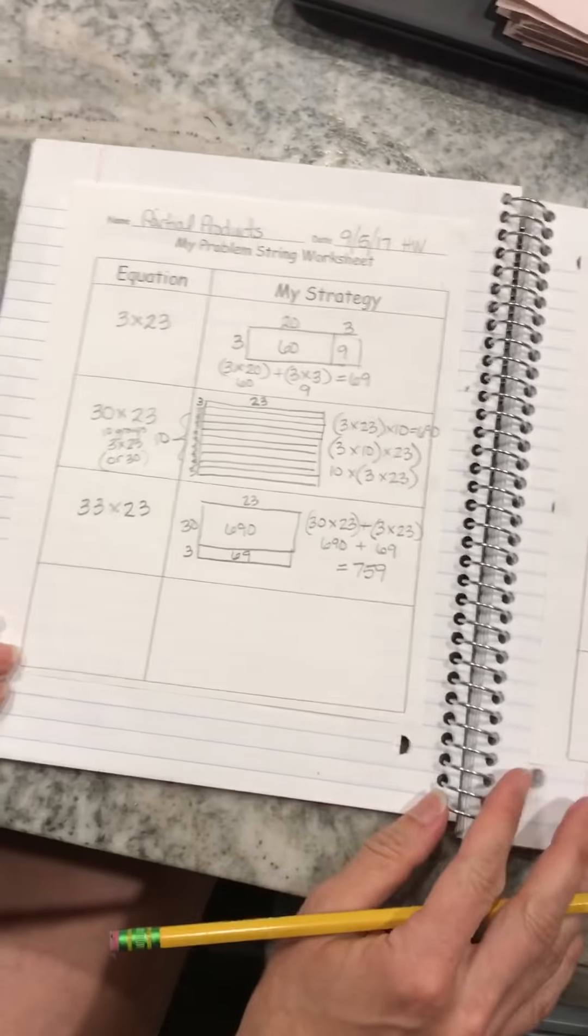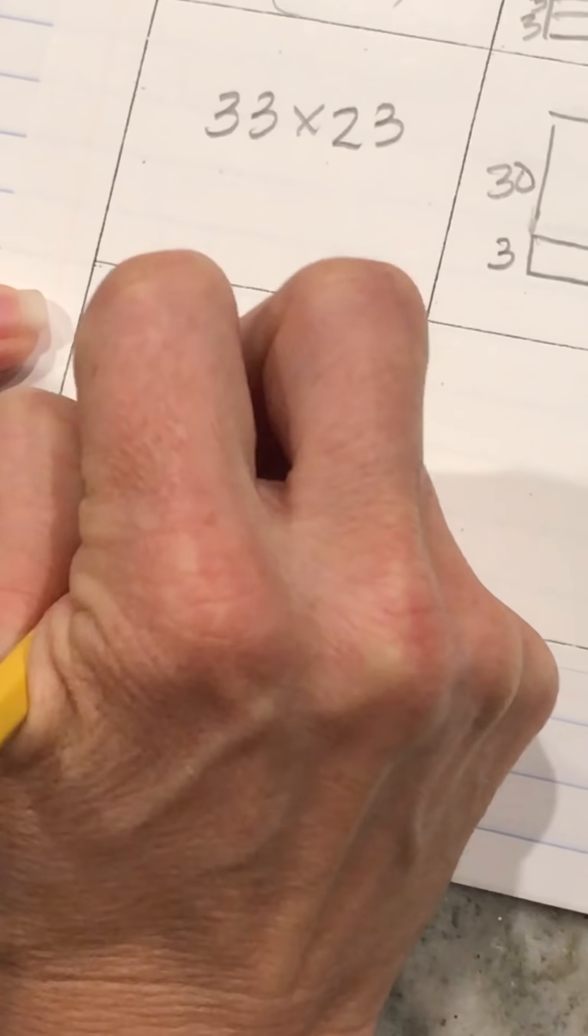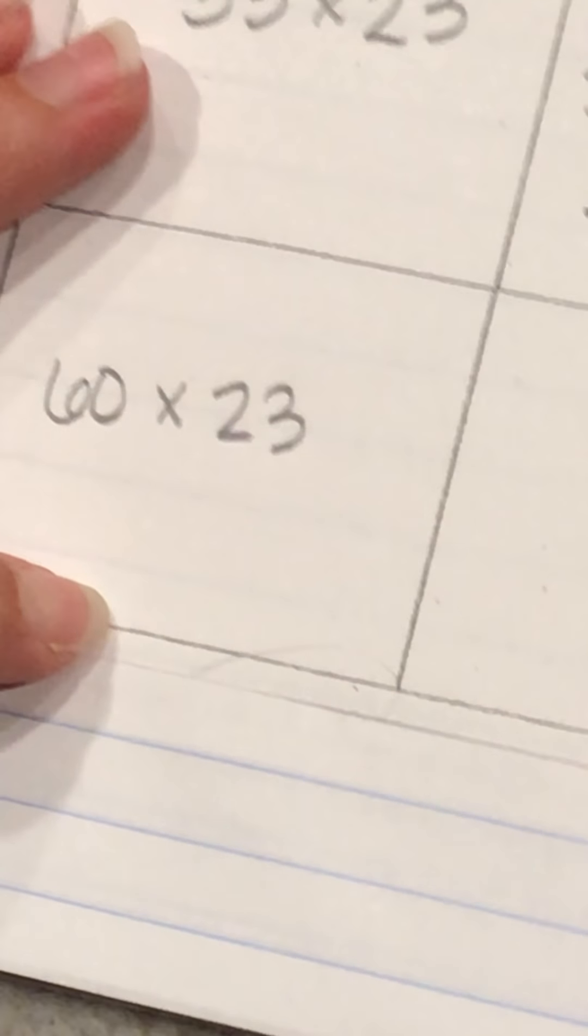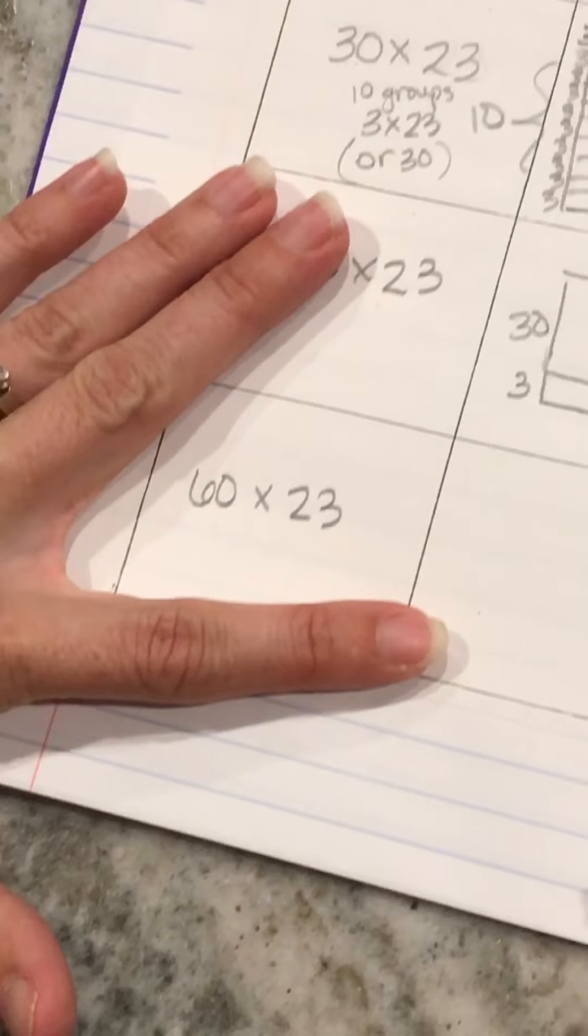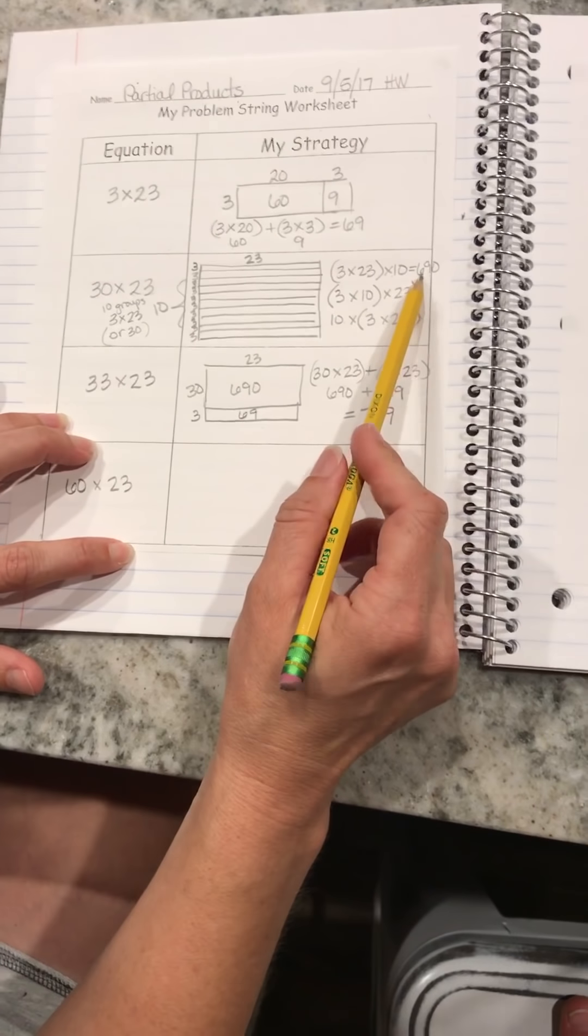My next problem, moving right along, is 60 times 23. With 60 times 23, I already know what 30 times 23 is. It was 690.